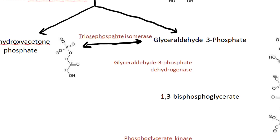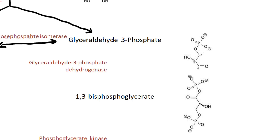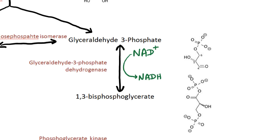The next step is going from glyceraldehyde 3-phosphate to 1,3-bisphosphoglycerate. In this reaction, NAD+ is converted to NADH with magnesium as a cofactor. The enzyme that facilitates this reaction is called glyceraldehyde phosphate dehydrogenase. Here you can see that a phosphate group has been added on this carbon.